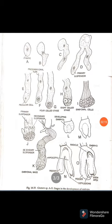In the two-cell pro-embryo, the upper cell functions as a suspensor and the lower becomes the embryonal cell. The zygote develops one or more tubular protuberances, as seen in figure C, usually toward the endosperm end — that is, toward the chalazal end.